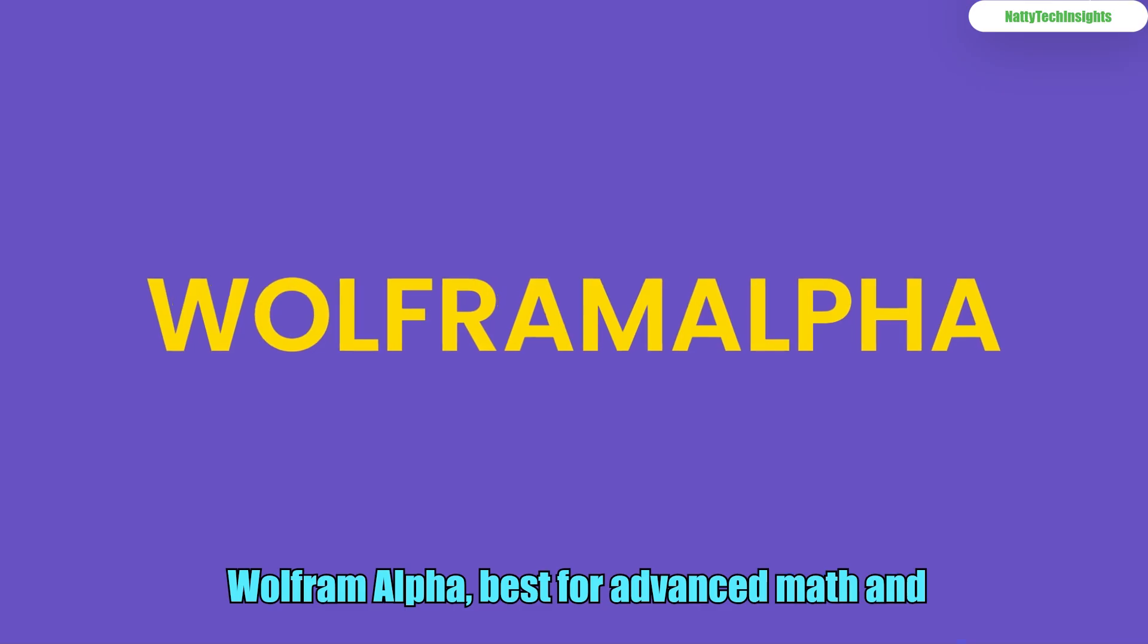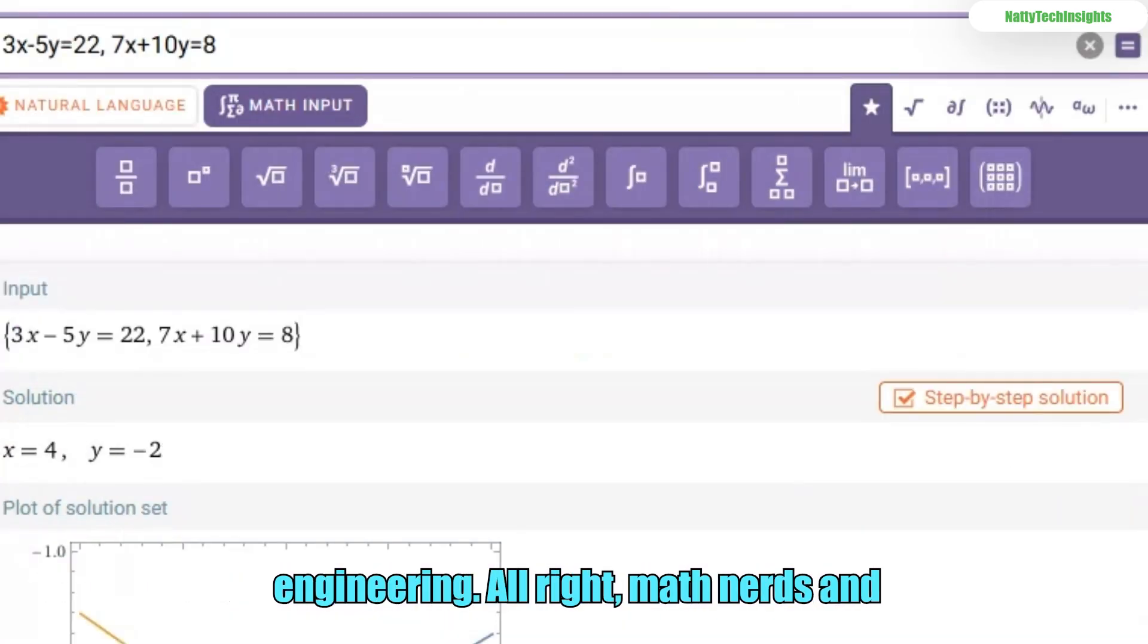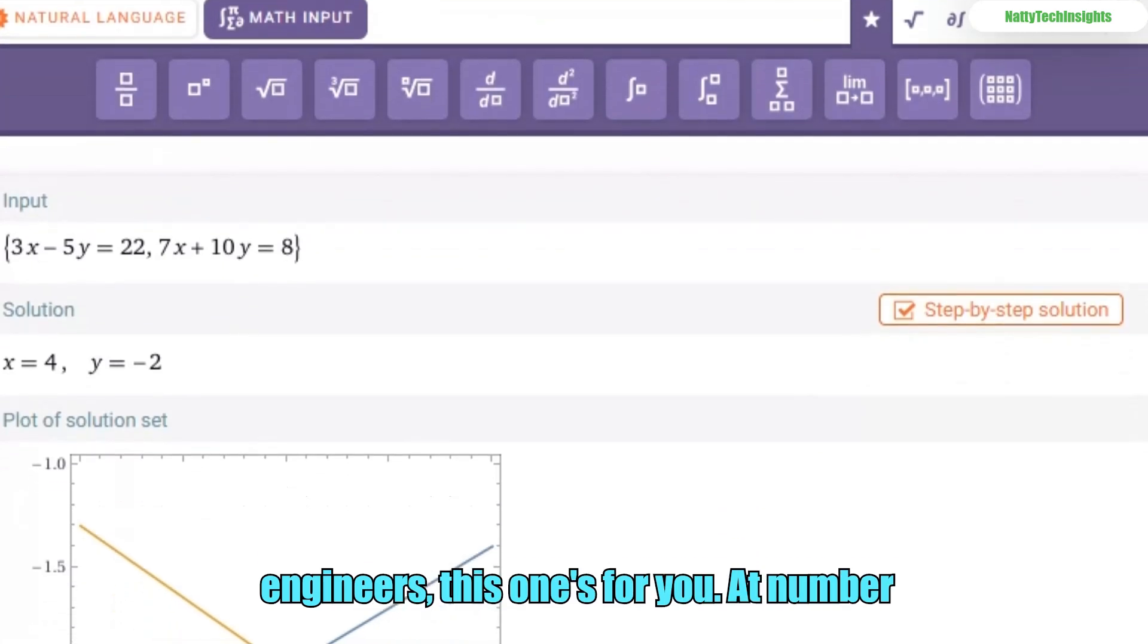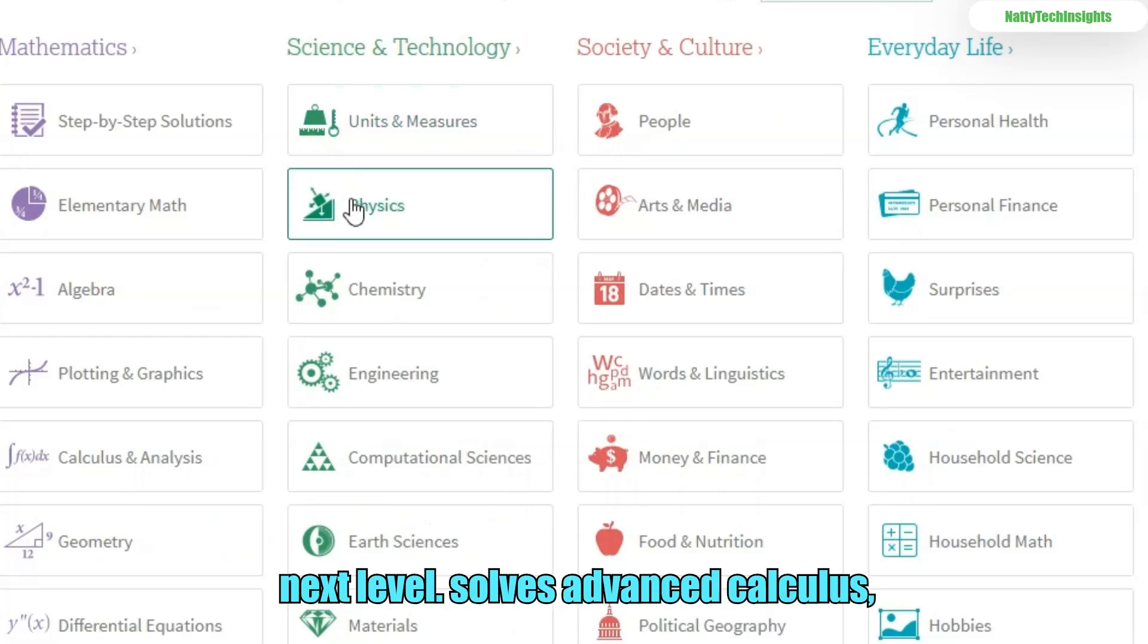App number 4. Wolfram Alpha. Best for advanced math and engineering. Alright, math nerds and engineers, this one's for you. At number 4, we have Wolfram Alpha. Why it's next level.